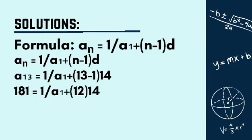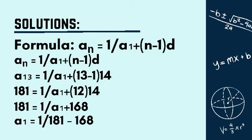Then, we will multiply 12 by 14. That will be 1/181 = 1/(a₁ + 168). After that, we need to move the a₁ to the other side. So, it will be a₁ = 1/181 - 168.